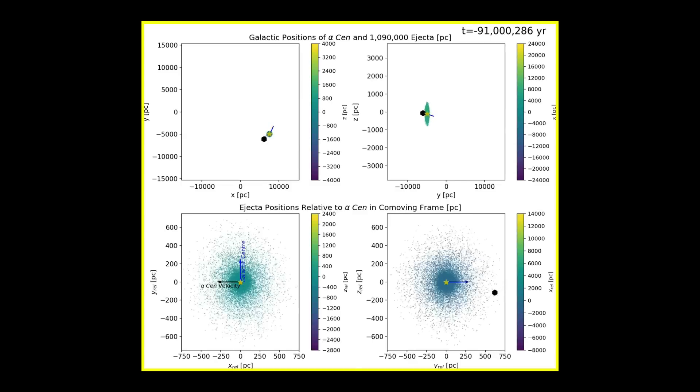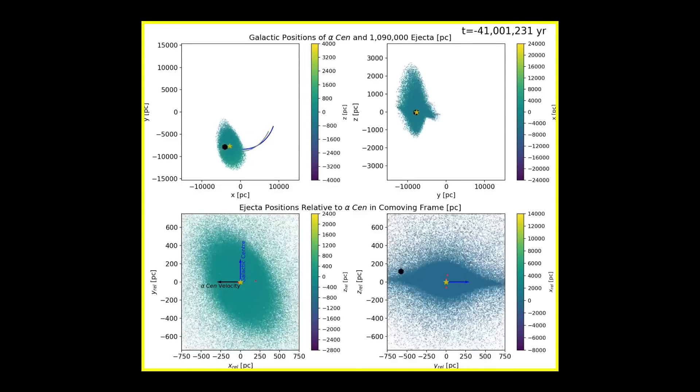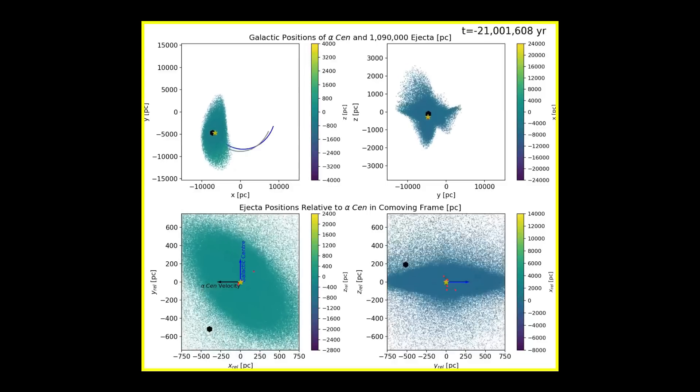This animation that tries to bring the research to life shows our Sun marked in a black hexagon, and its orbit is shown as a gray solid line.